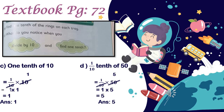In number D, one tenth of 50. Ten is our bottom number and 50 is our upper number, so we divide 50 by 10. The answer is 5, then one multiplied by five equals five.